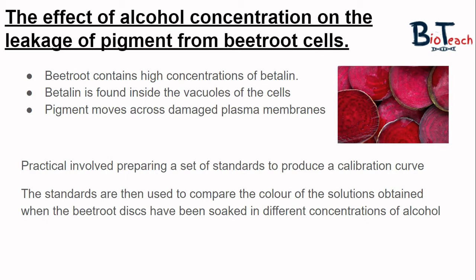There are two parts to this practical. The first part involves preparing a set of standards to produce a calibration curve. The standards are then used to compare the colour of the solutions obtained when the beetroot discs have been soaked in different concentrations of alcohol. The independent variable is the concentration of alcohol, and we will be keeping temperature constant with the use of a water bath.